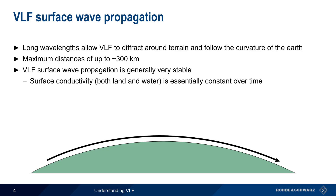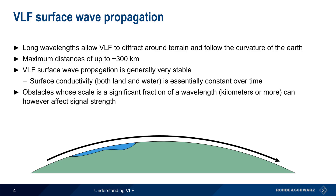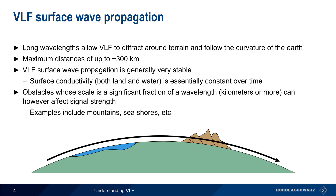Note that obstacles with sizes that are a substantial fraction of the signal wavelength can, however, affect signal strength. At VLF, these types of obstacles would include mountains, seashores, and other large geographical or topological features.